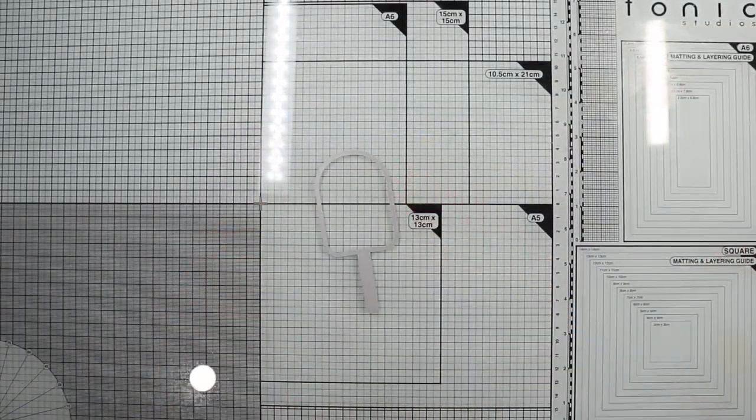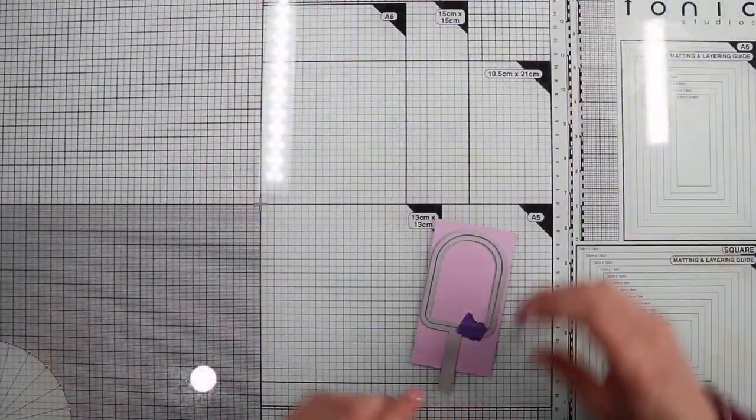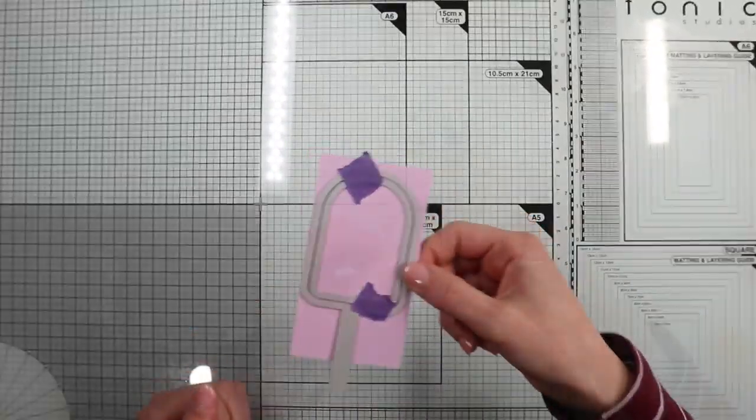And now let's move on to the focal point. That will be a shaker ice cream. First, I'm going to die-cut the outlines of the ice cream onto the lilac classic card.